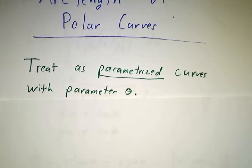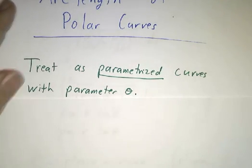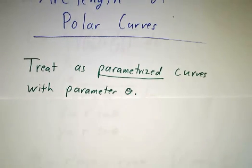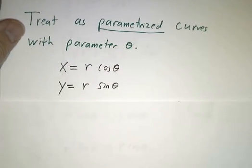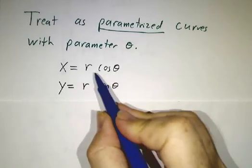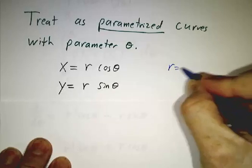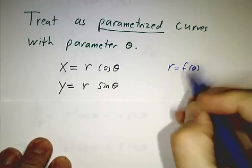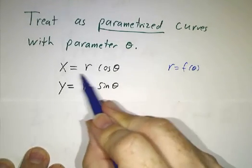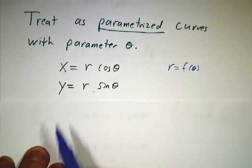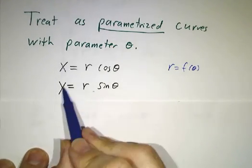Now, we've done this before - we've written everything in terms of parameter t and said let θ equals t and r equals f of t. Let's just skip a step and call our parameter θ itself. So you can write x and y in terms of θ, where r is some function of θ. You take that function, plug it into the fact that x is r cosine θ and y equals r sine θ, and now you've got x and y in terms of θ.